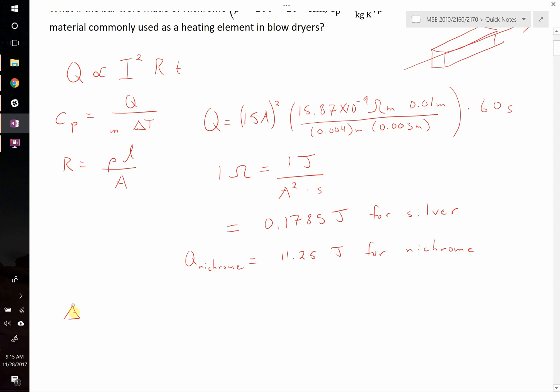Let's rearrange our expression. We can write that delta T should be equal to Q divided by the mass of our object multiplied by its specific heat. Well, that's easy enough. For silver, we can write that that is 0.1785 joules. That's going to be divided by the mass. Now, how do we get the mass? Well, we know that the mass is equal to the volume times density.